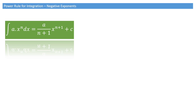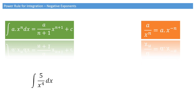We've seen how to use this. We know how to integrate things like x squared or 3x to the power of 5. But what if we had to integrate 5 over x to the power of 4? Well, the good news is we can use what we know from algebra to integrate this. Remember, a over x to the power of n is equal to a times x to the power of negative n.